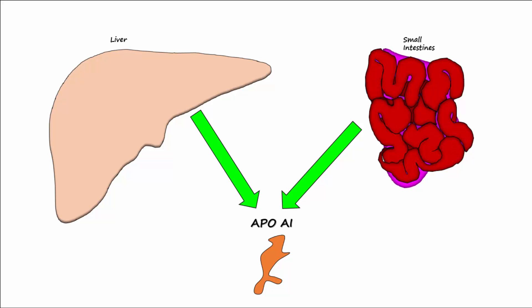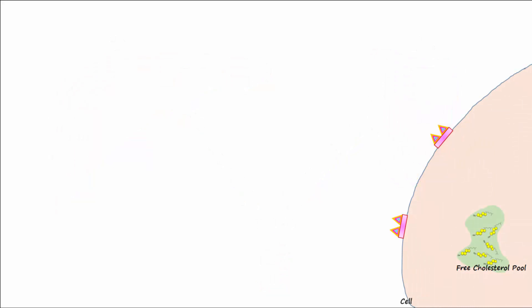A protein called ApoA1 is floating around in the plasma and is produced by the liver and small intestines. On body cells there is a receptor called ATP binding cassette or ABCA1. This receptor will bind to ApoA1, allowing ApoA1 to remove some cholesterol from the free pool inside the cell.